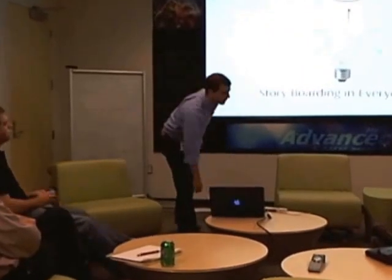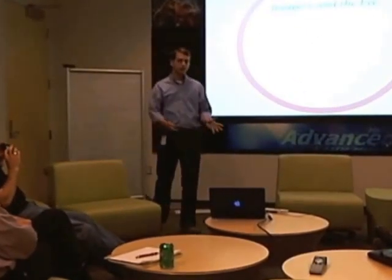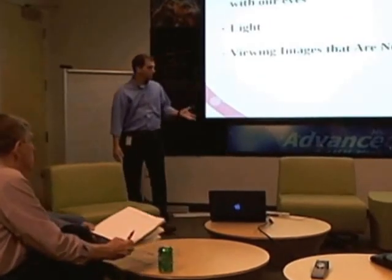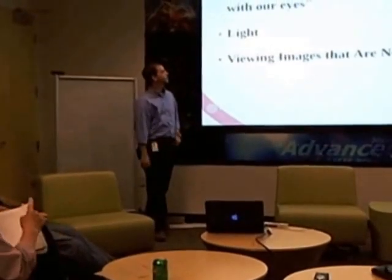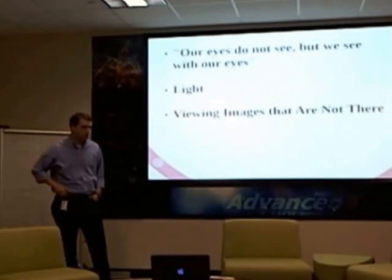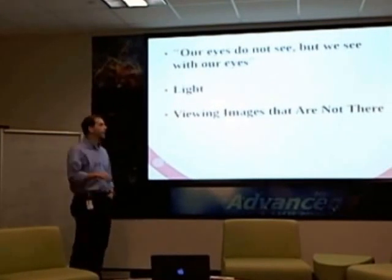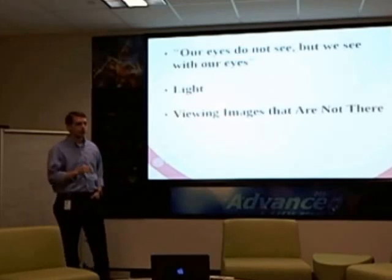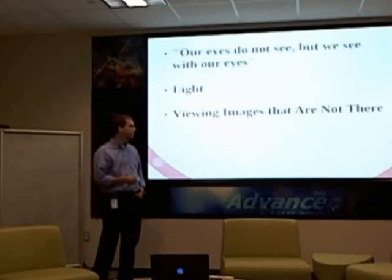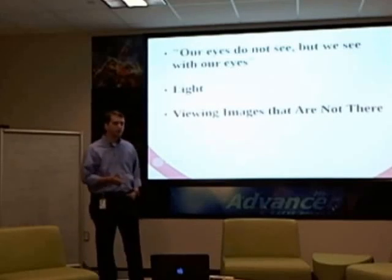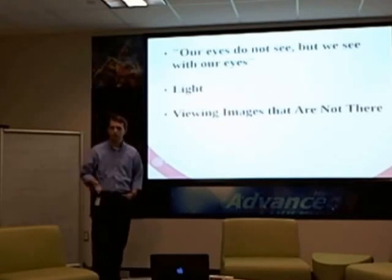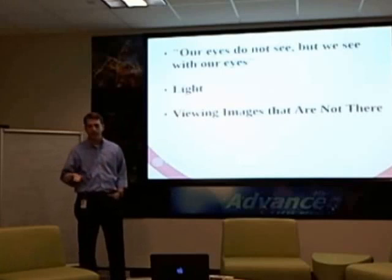Let's get started by talking a little bit about imagery and the eye. This is really just basic stuff most people would know. But one of the great quotes I found is: our eyes do not see, but we see with our eyes. What's really interesting is that everything in everyday life that we look at is not necessarily how it should be seen. The way we perceive an object around us is not by the object itself, but how light reflects off the object.